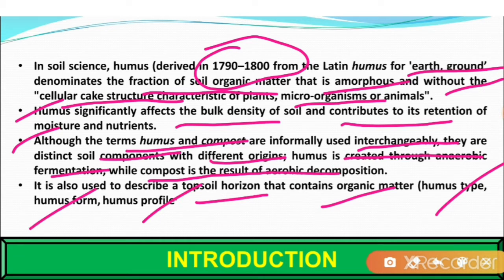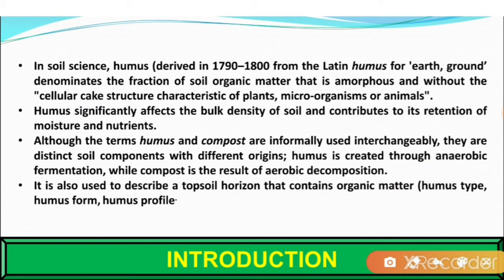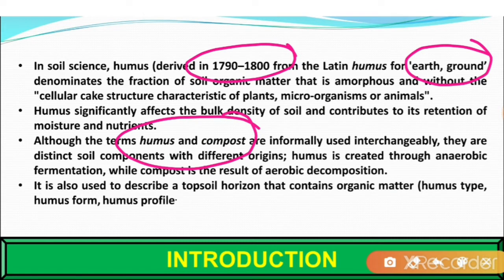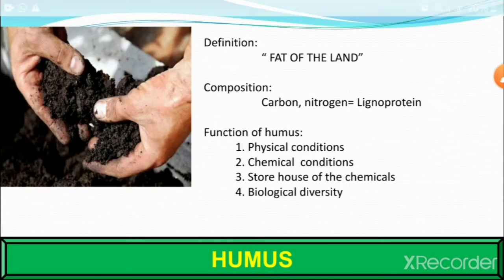To clarify, the word humus is derived from Latin meaning earth or ground, coined around the 1790–1800 era. Humus and compost are often used interchangeably but they are totally different from each other — humus is created under anaerobic conditions while compost is created under aerobic conditions.